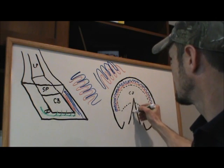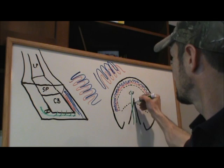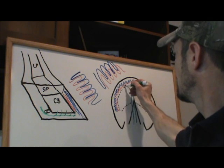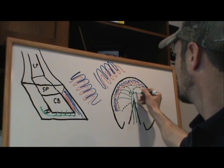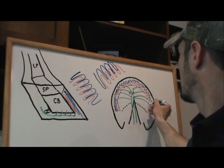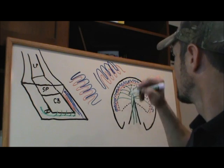So again, in this orientation runs underneath the foot and it's feeding lamina there at the bottom, feeding the coffin bone, feeding the sole. It's a pretty important vessel.